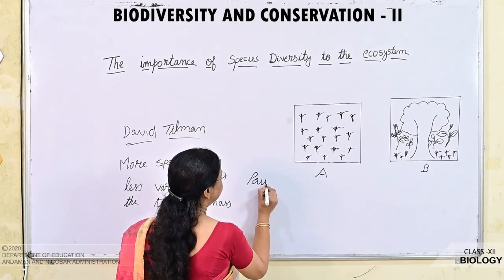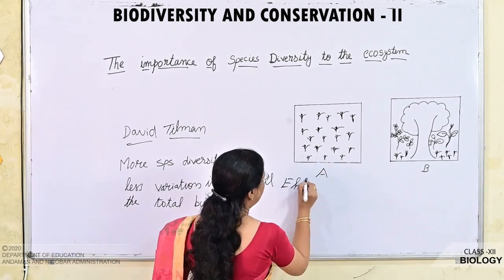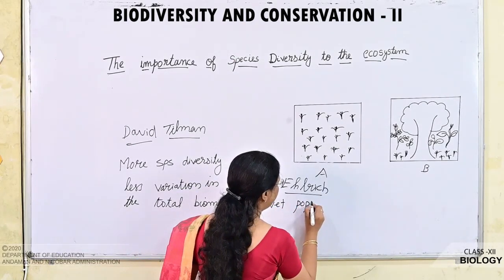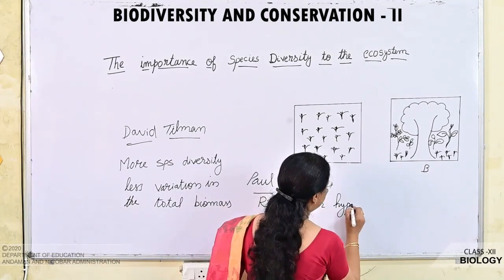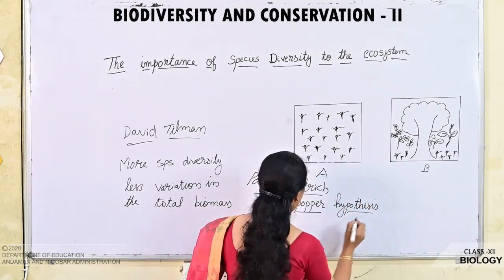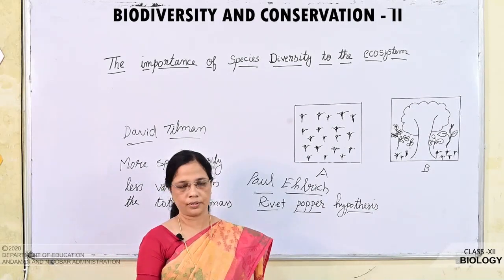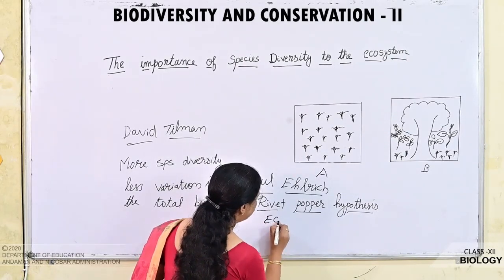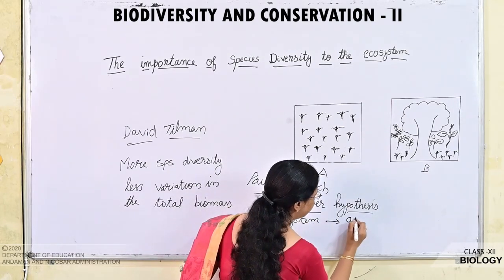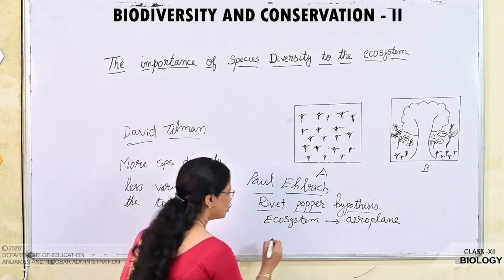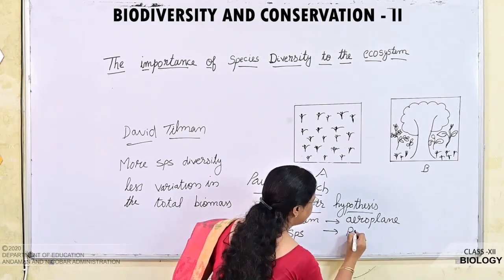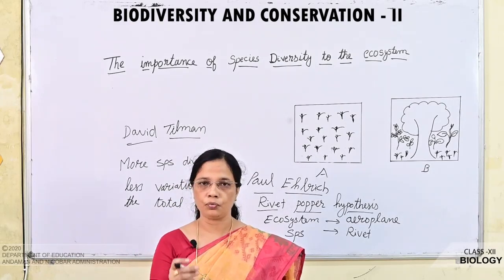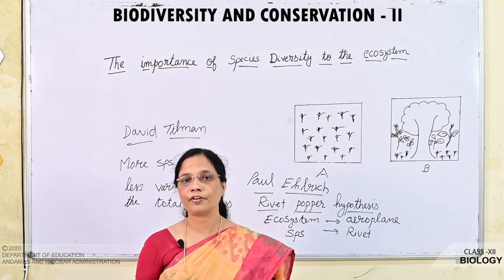Another ecologist, Paul Ehrlich, proposed a hypothesis known as the Rivet Popper Hypothesis. What is a rivet? A rivet is nothing but a nut and bolt, and 'popper' means to take away. He compared the ecosystem with an aeroplane and species with rivets. A passenger travelling in the aeroplane, if they remove one rivet from the seat, that will not cause any effect to the aeroplane.